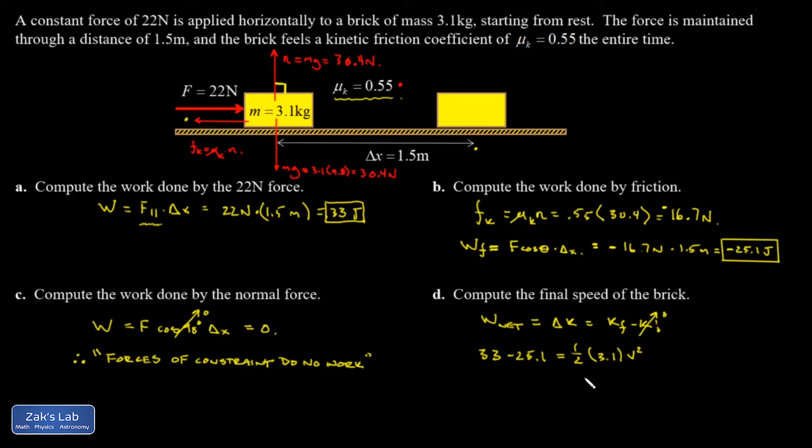And I simplify that difference, multiply by 2, divide by 3.1, and I get V squared equals 5.097. Don't forget to square root the thing. And V comes out to 2.26 meters per second.